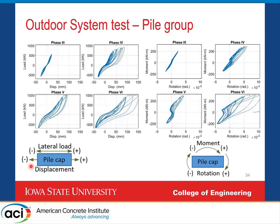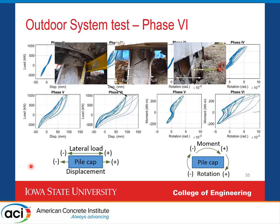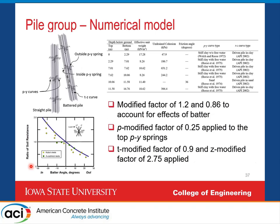This shows the force-displacement characteristics of the pile foundation system. The first crack developed in phase four, so phase two represents the maximum load the connections would have seen. Phase four pushed to the extreme limit when the crack developed, and by phase six, the connections were starting to have issues. On the numerical side, we developed a model in SAP to characterize the behavior. Soil characteristics were captured using PY springs and TC springs, using Welch and Rees' recommendations for lateral springs and API recommendations for TC springs.